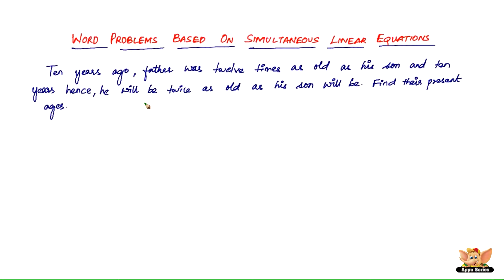In this video, let us continue to solve word problems based on simultaneous linear equations. We've got a question which reads like this: 10 years ago, father was 12 times as old as his son, and 10 years hence, he will be twice as old as his son will be. Find their present ages.